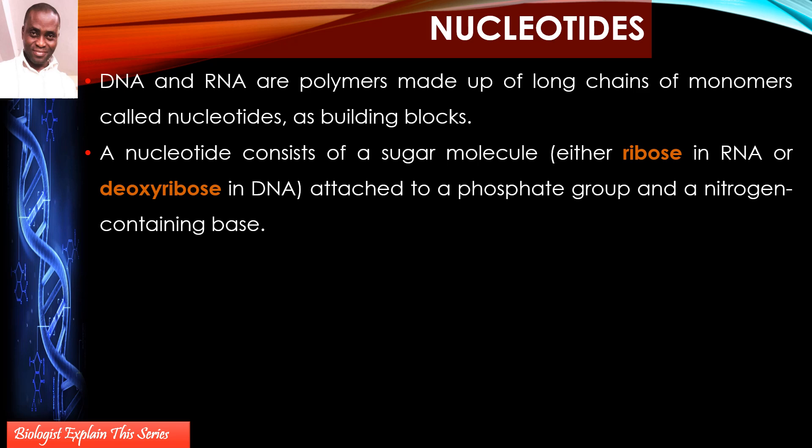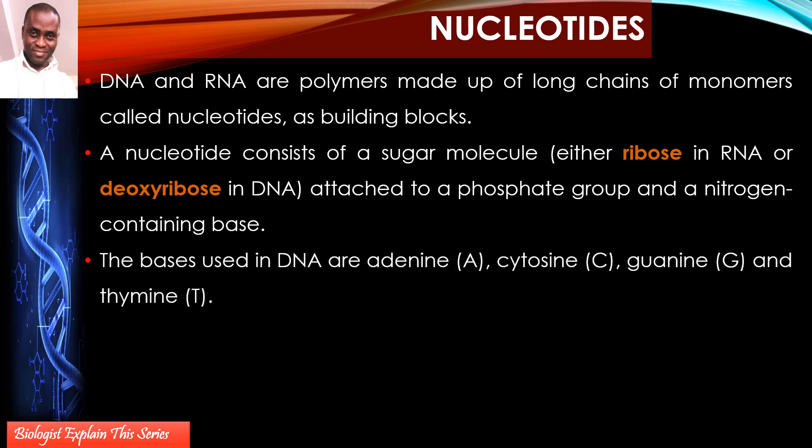DNA and RNA are made up of long chains of nucleotides. Nucleotides are the monomers used to build nucleic acids. A nucleotide consists of three basic components: a sugar — which is a 5-carbon pentose sugar — a phosphate group attached to the sugar, and a nitrogen-containing base.